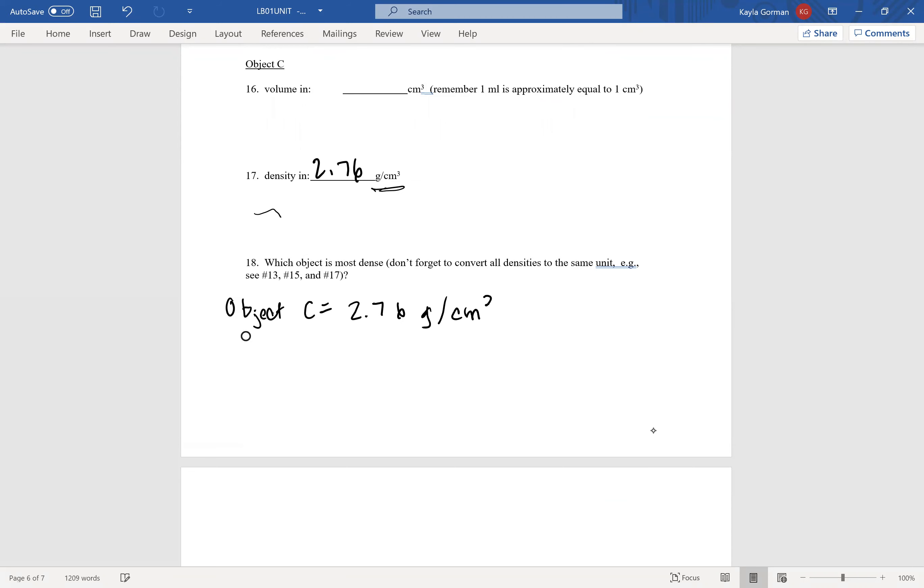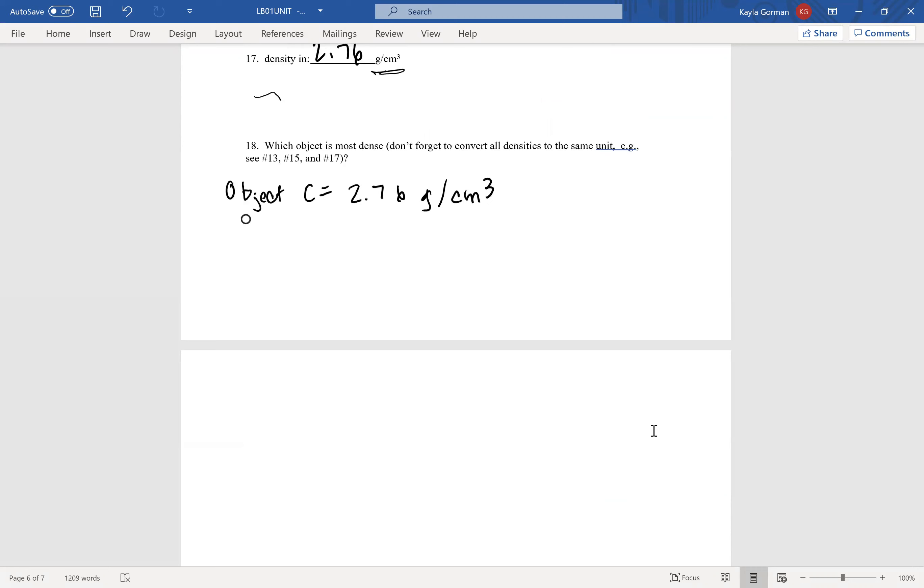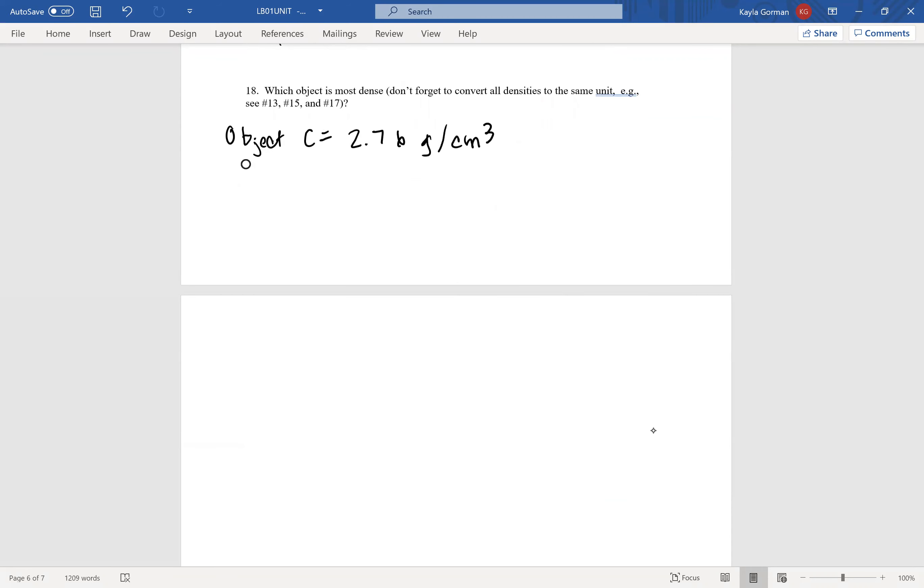We want to switch them all to grams per centimeter cubed. So this is the units we're going to work in. So we know this is Object C's density. Now we have to figure out Object A and Object B's density within the units of grams per centimeters cubed. So let's do Object A first.